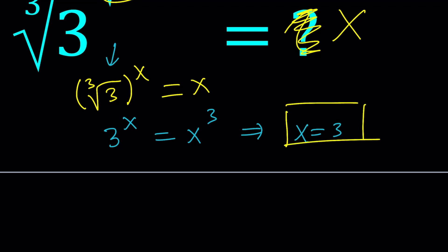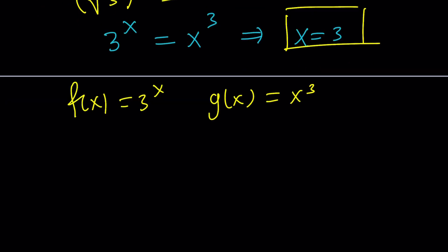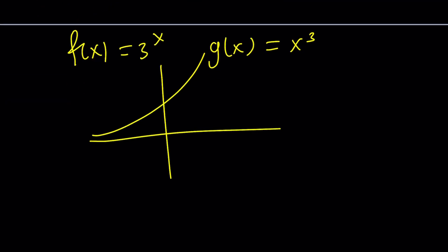Now if you graph f of x equals 3 to the x, and g of x equals x cubed, you're probably going to realize that you get an exponential function that looks like this. And x cubed is actually going to look like this, and then kind of look like that. And these functions are going to intersect at a point. But that's not the only point they intersect. Why? Because the exponential is going to catch up. Obviously, that is going to grow much faster and intersect again. So if you go ahead and check the intersection points or use some type of calculator, you can realize there are two solutions to this equation. X equals 3, and the other one is approximately 2.47805.